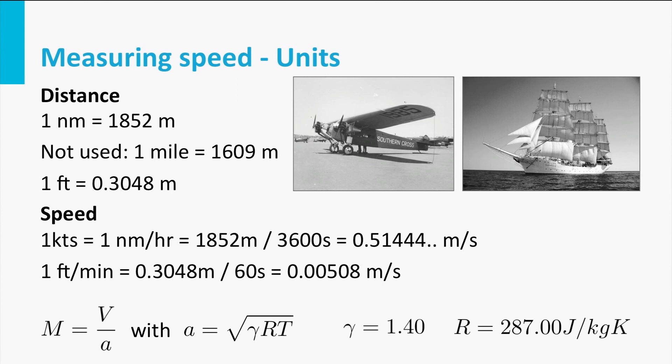For vertical speed the unit feet per minute is used. And to get a feeling for it, a normal vertical speed in an airliner is 1500 feet per minute - that's a sort of regular, common vertical speed.